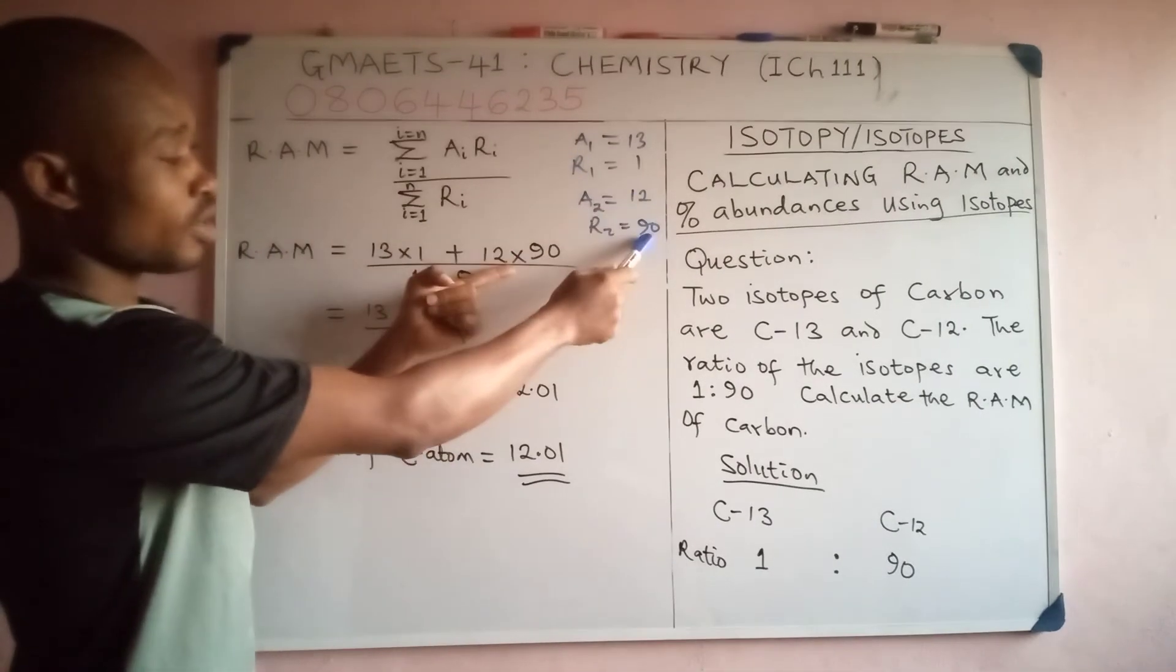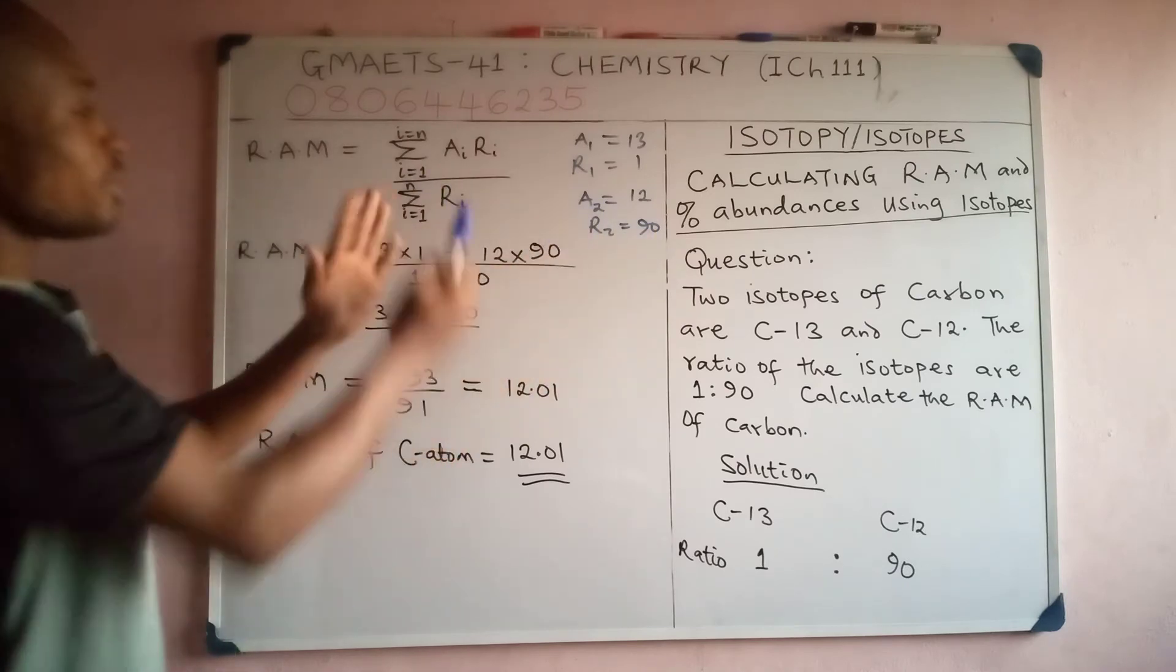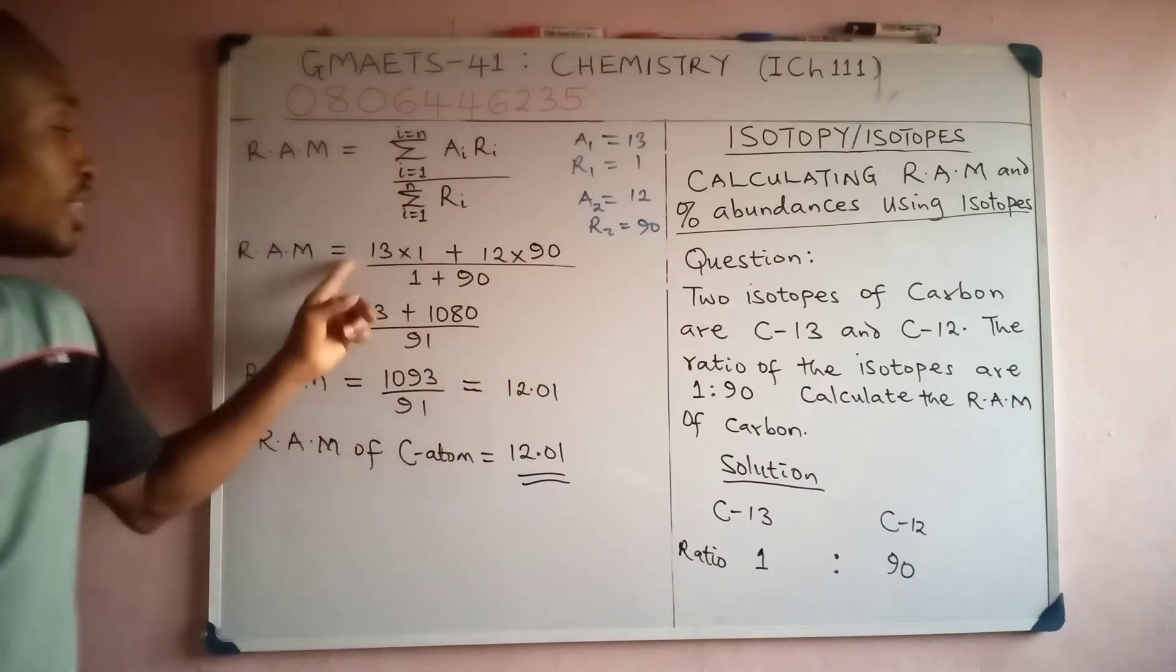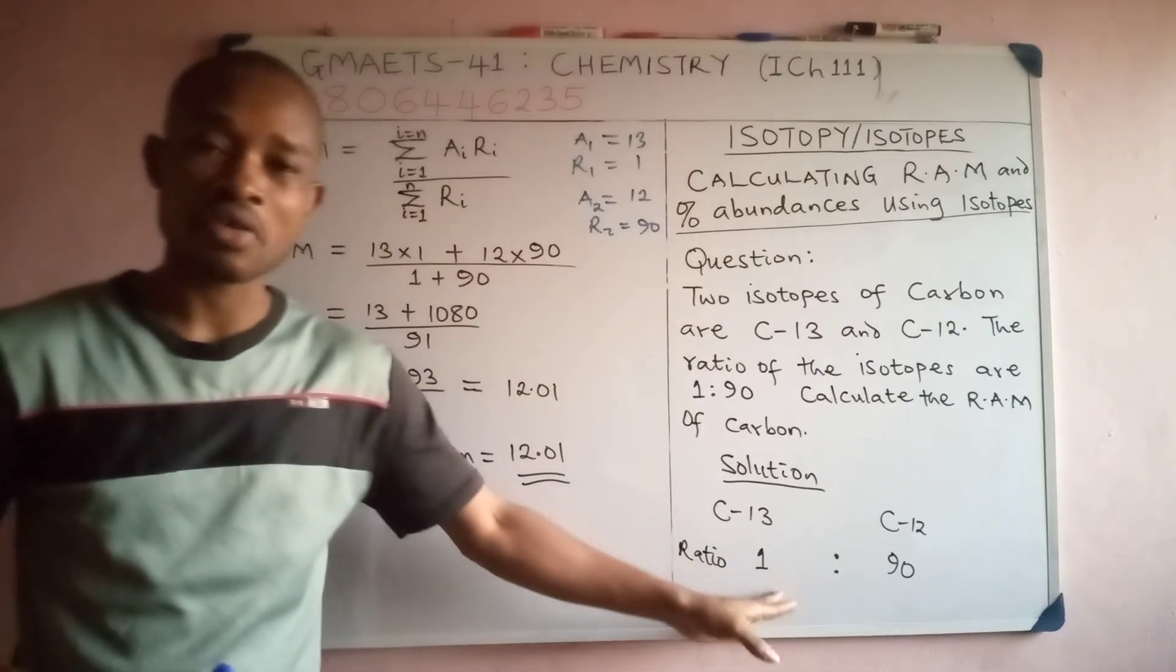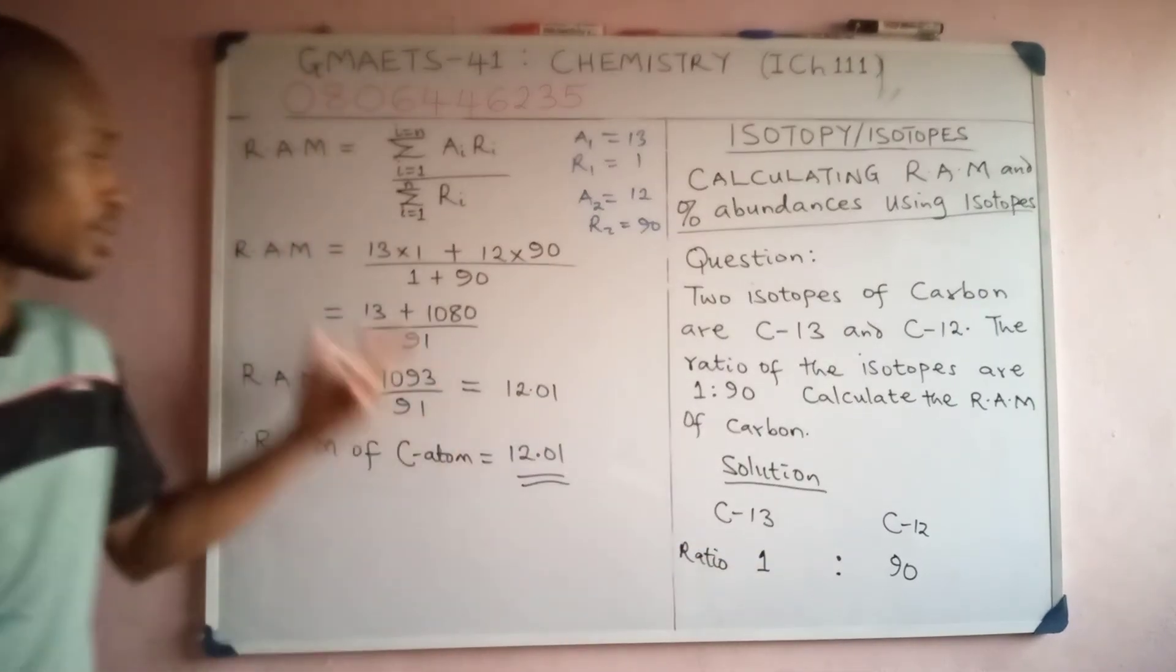Then divide everything by summation of the given ratios. And of course the ratios here are 1 and 90, so we're going to add the two ratios together.